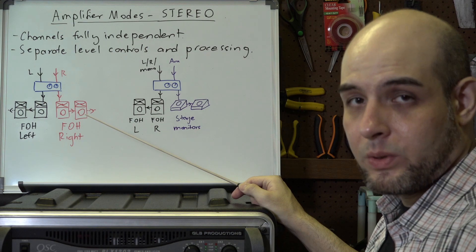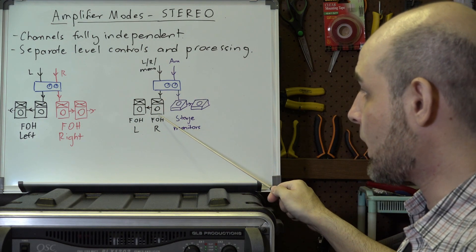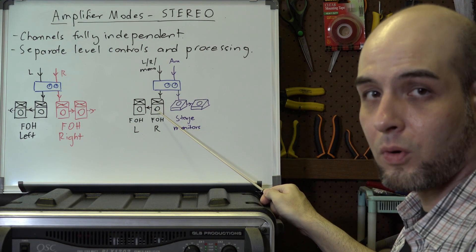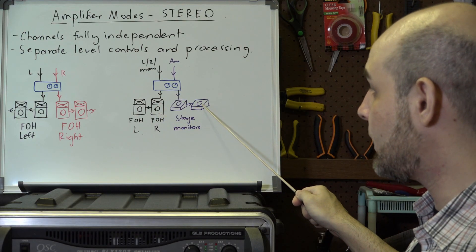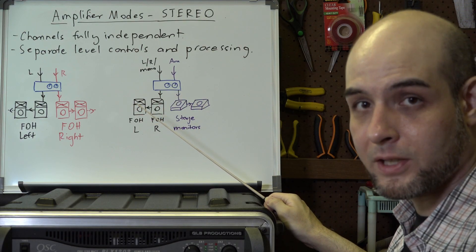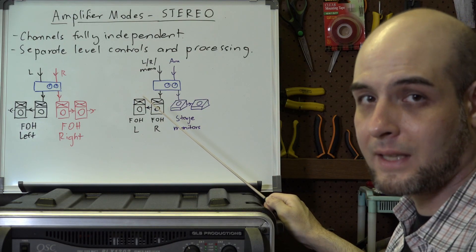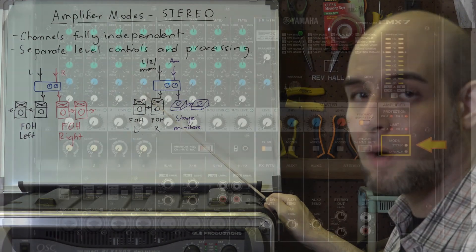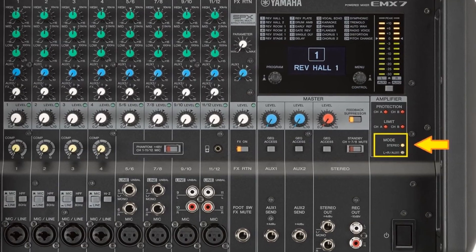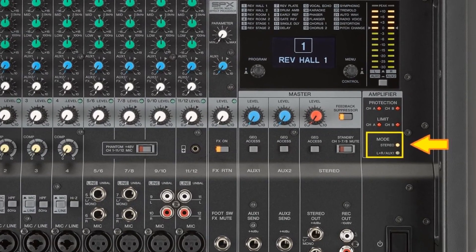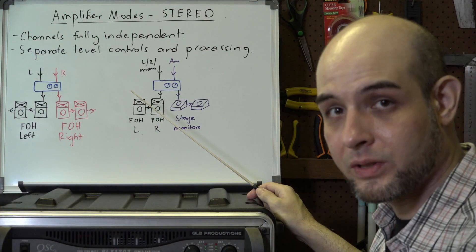Another way to deploy the two channels is to use one channel for your mains or front of house and the other channel to run stage monitors. This is a very common setup with stereo powered mixers, which have two channels in their internal power amplifier and are typically required to run the whole show.